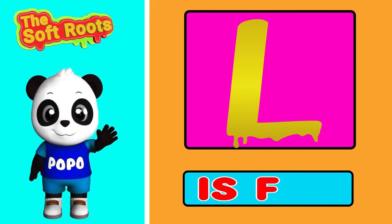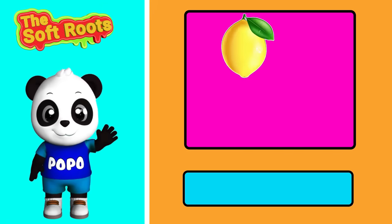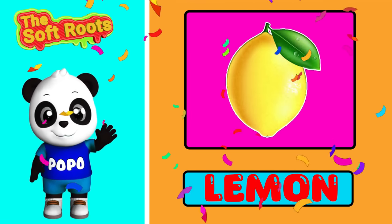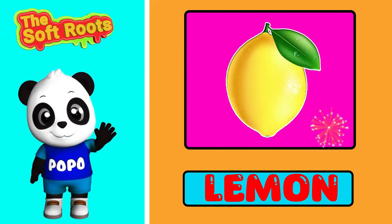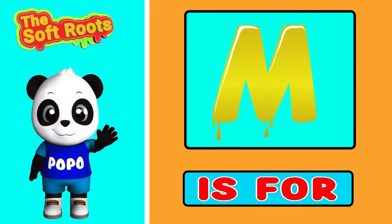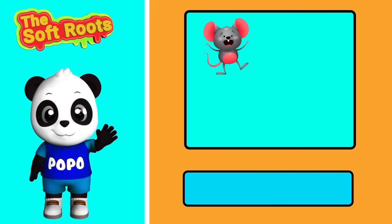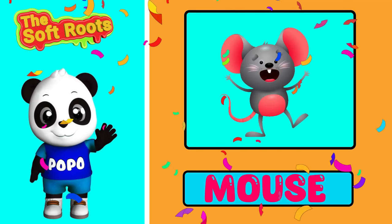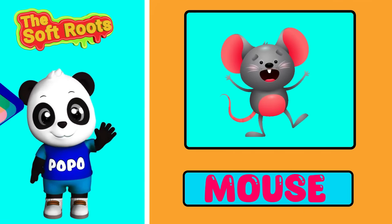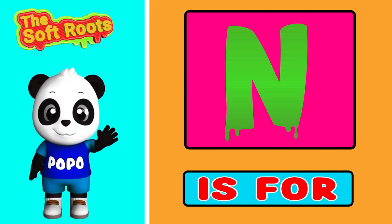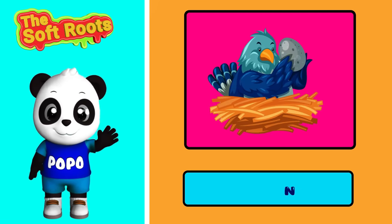This is Kite. L is for Lemon. M is for Mouse. N is for Nest.